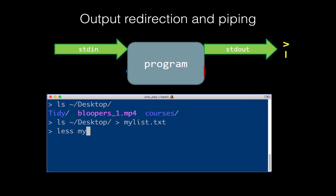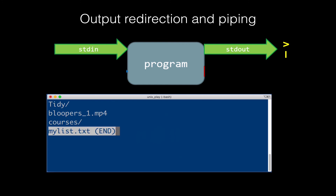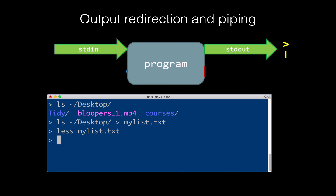The output didn't print back to me anymore, but if I look inside this file, I can see the contents listed there — tidy, bloopers1, courses — all there. That created an independent file you can see. I'm going to remove the my_list.txt file now.